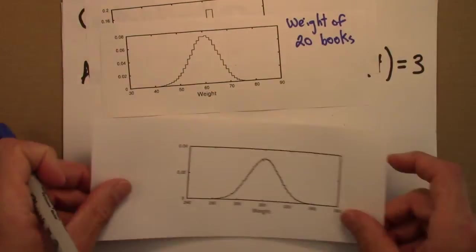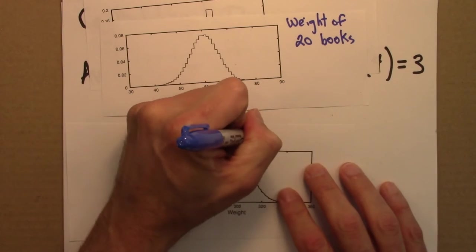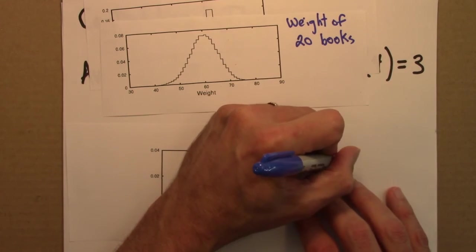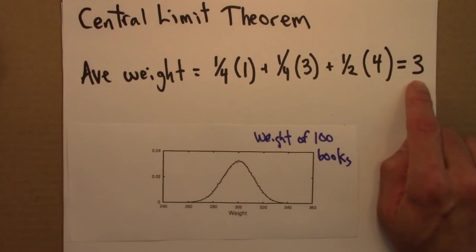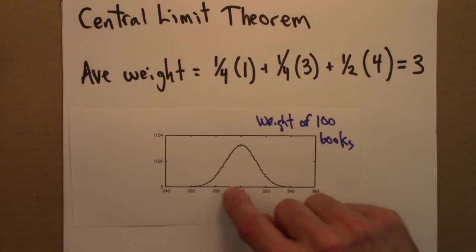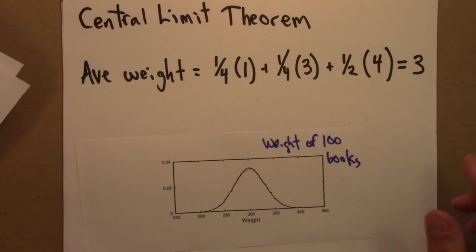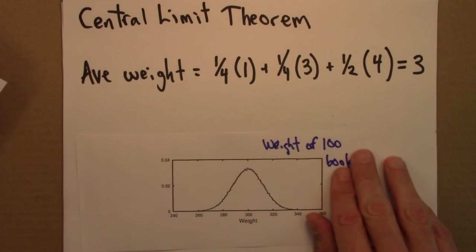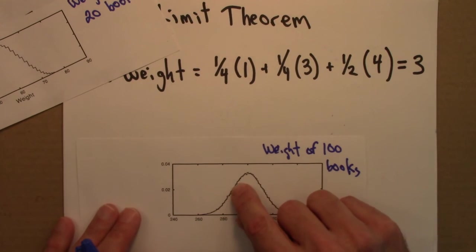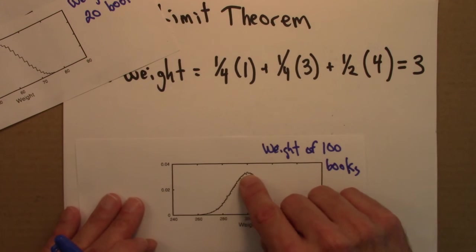Now let's look at 100 books. The average total weight is 3 times 100, which is 300. Sometimes you get a lot of heavy books, sometimes a lot of light ones. But the distribution of 100,000 different samples of 100 books is clearly starting to look like a bell curve — a Gaussian. I've even drawn a dotted line for the normal distribution, and it goes right on top of the histogram.